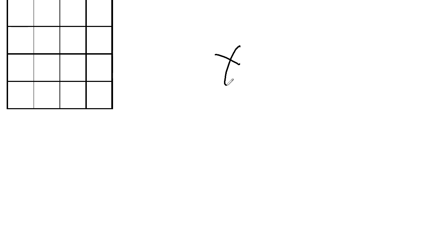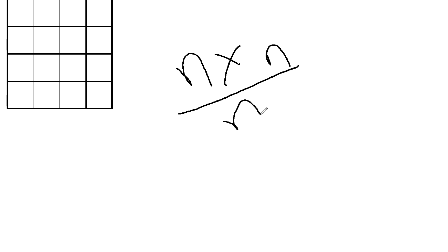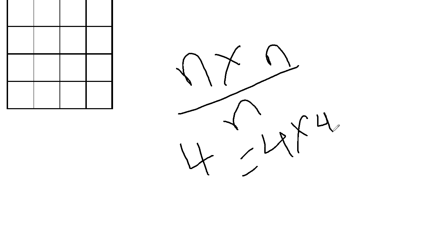To understand the N-Queens problem: given an n×n matrix, we have to place n queens in the matrix. Suppose n is 4, so the matrix will be 4×4, and I have to place 4 queens in it.